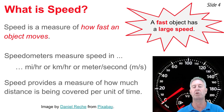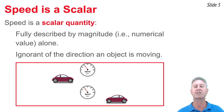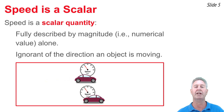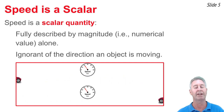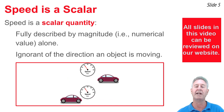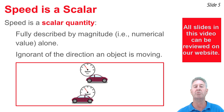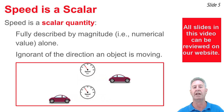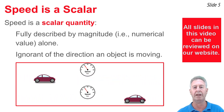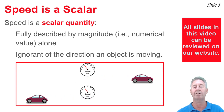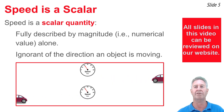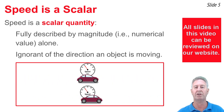Speed is a scalar quantity. Whenever we say something is a scalar quantity in physics, we mean it's a quantity described fully by magnitude alone — direction is not involved in describing speed. Here we see two cars moving in opposite directions, each with a speedometer reading of 20 meters per second. These two cars have the same speed, since direction doesn't matter for any scalar quantity. Speed is ignorant of the direction of motion.